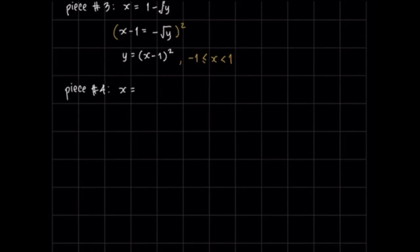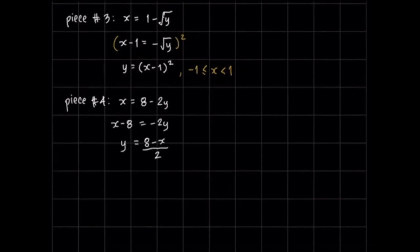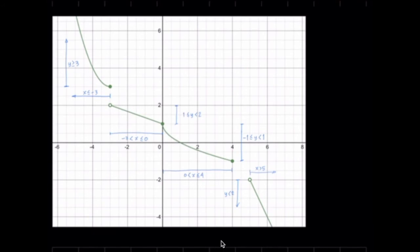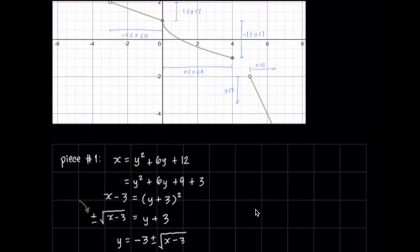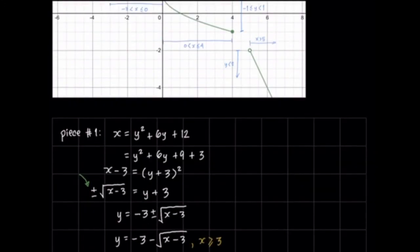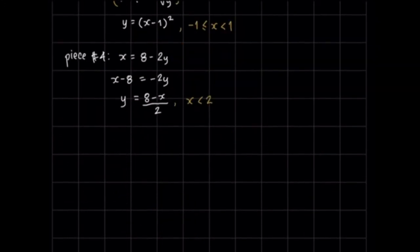Let's take a look at the fourth piece. Interchanging x and y, we write x = 8 − 2y. Solving for y: x − 8 = −2y, so y = (8 − x)/2. In our original function, the fourth piece has y values where y < 2 because there is a hollow circle there. So the fourth piece of our inverse will be defined when x is less than 2.